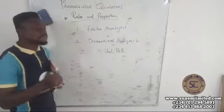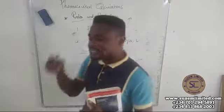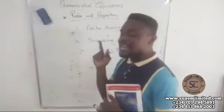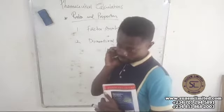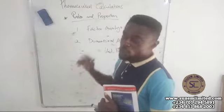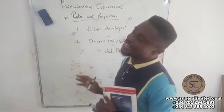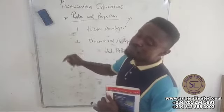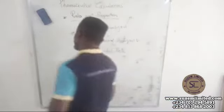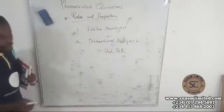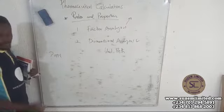The first thing to do in dimensional analysis is to target the unit or quantity you are looking for. Once you target the quantity — let's say they ask 'how many moles' — that is what you are looking for. You can put a question mark before it as a placeholder.